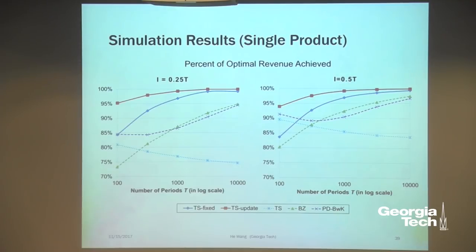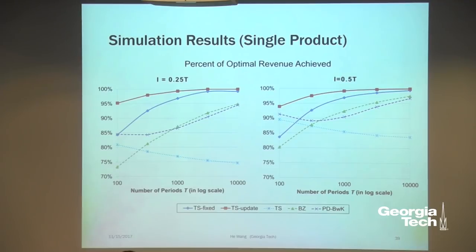In response to a question about why customers don't buy: there may be different reasons, but this is a controlled experiment where the only thing we change is price. The customers have other reasons we don't control, but the only causal effect we're measuring is demand against price. We either show a high price or a low price, and customers are randomly drawn from the pool, so we assume demand is IID for all customers. We're just changing price as experimentation.